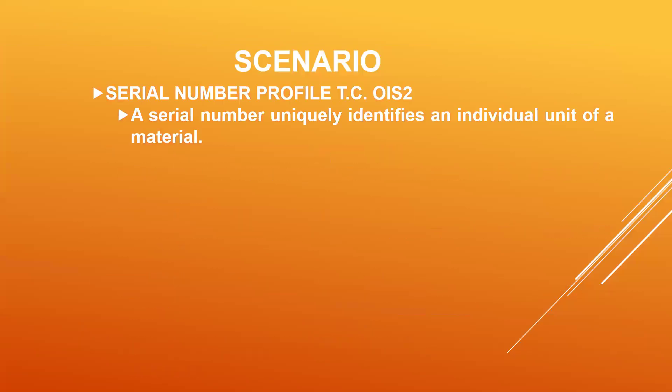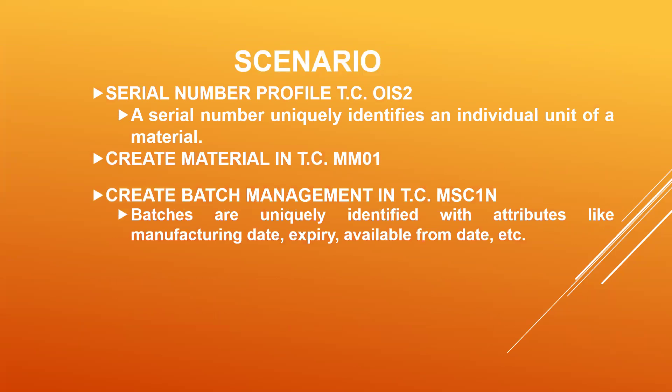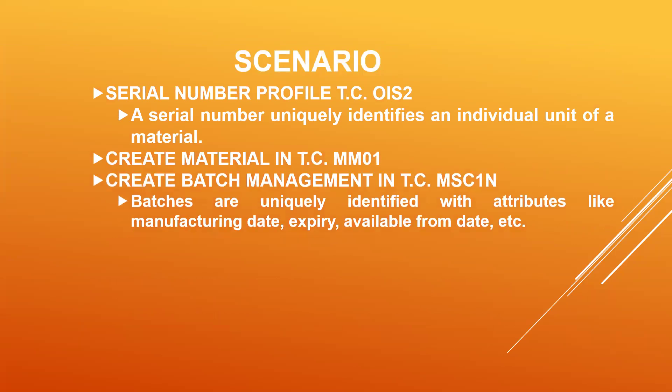So what I am going to do is to create a serial number profile using transaction code OIS2. A serial number uniquely identifies an individual unit of the material. Then I will create a material and create batch management in MSC1N with that material.